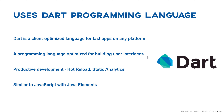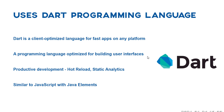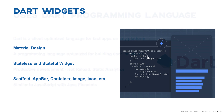Dart is a programming language optimized for building user interfaces. It's very productive with the help of hot reload and static analytics, which helps you build less buggy code. It's also very similar to JavaScript, and if you're familiar with for loops and Java-style structure, Flutter will look familiar.